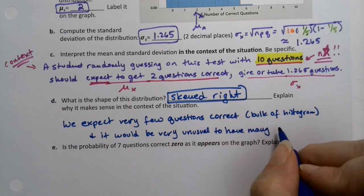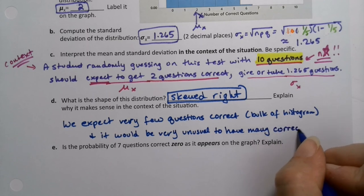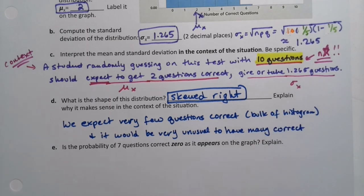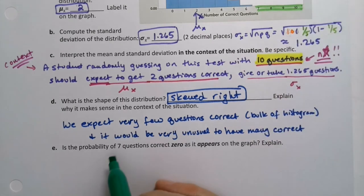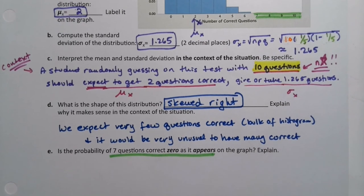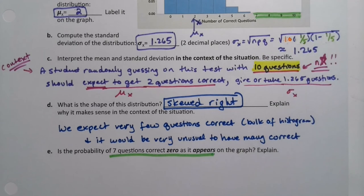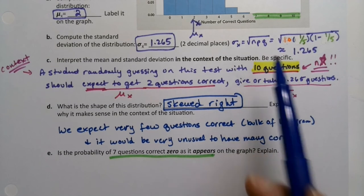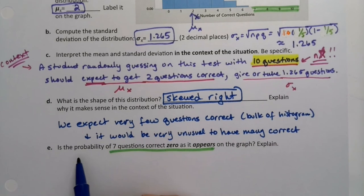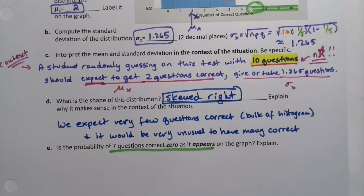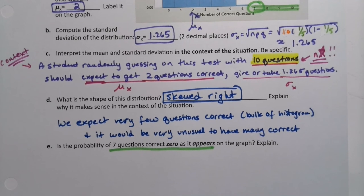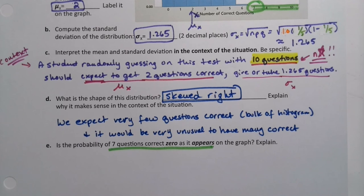Now, are 7, 8, 9, and 10 zero as they appear on the graph? When you look at them on the graph, they look like they're blanks. Are these values zero? Why is it that there's no bar drawn? They're not zero. We've actually proven that. We've already seen these probabilities. Is the probability of seven questions correct zero? It's really asking about seven, specifically this one.